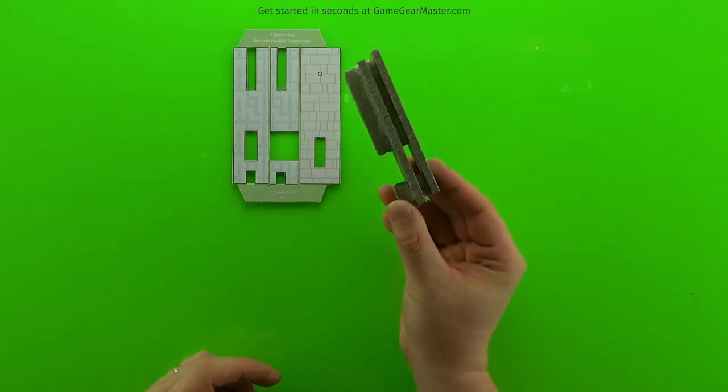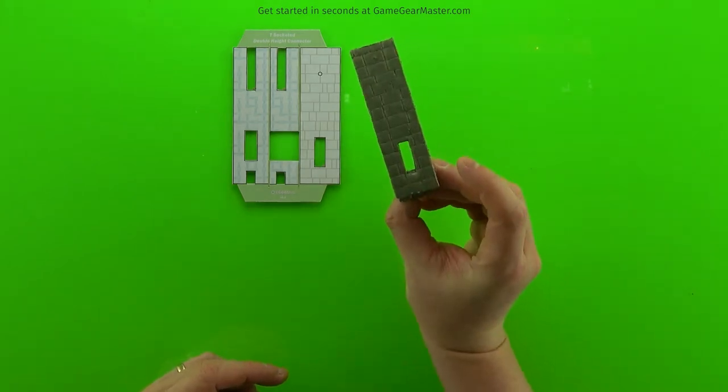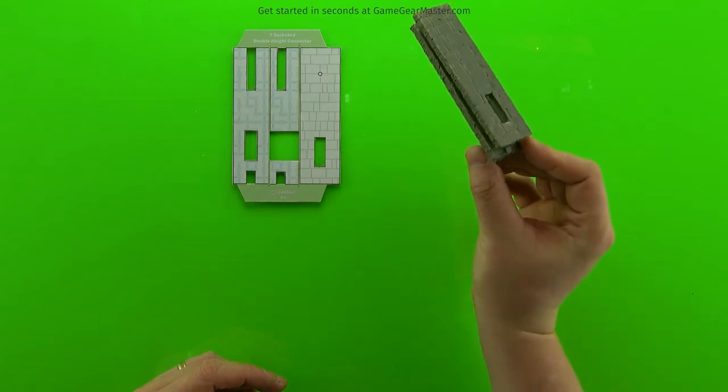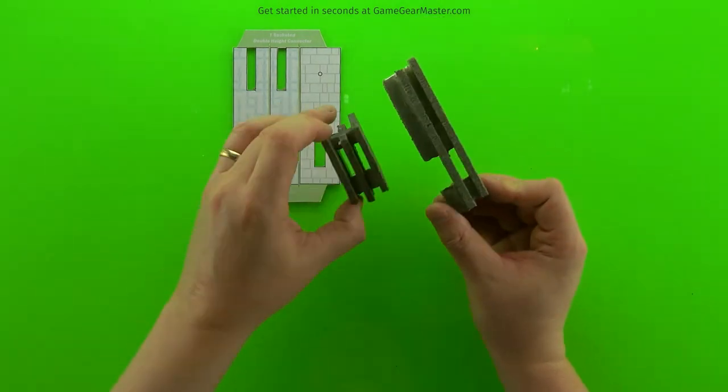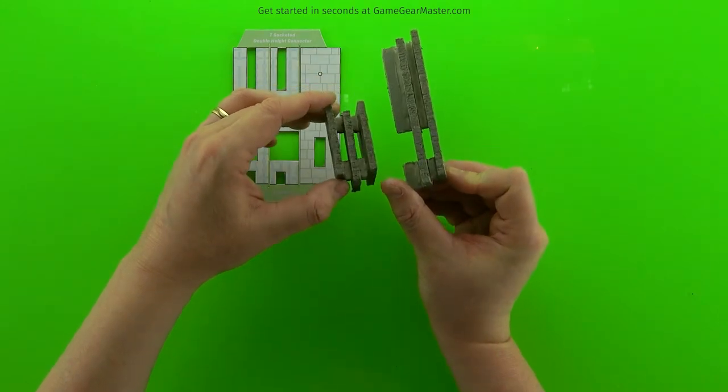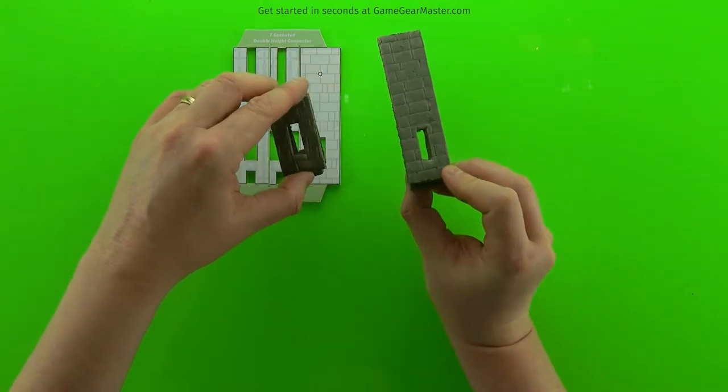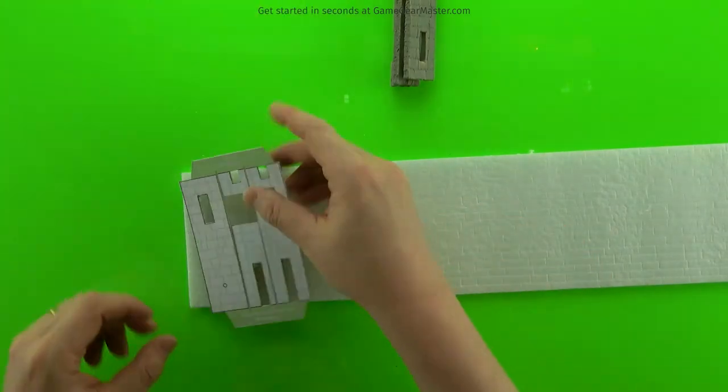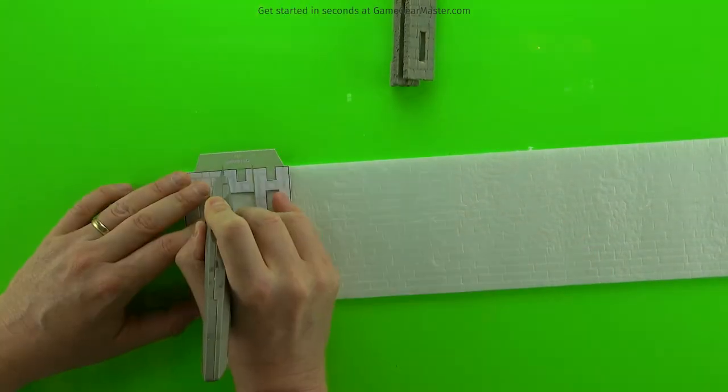Next we're going to make a double height T connector. You'll notice that the socket on double height connectors is on the bottom half, but the idea is the same. You want to make sure that void in the middle lines up with the hole on the front. And this time we're going to use a four inch piece of textured foam. So we're going to cut out that exterior facade piece.